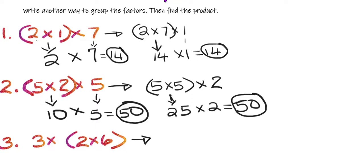Instead of doing 3 × 2 × 6, what if we did 3 × 6 first? And then multiply that by two? So three times six is 18. 18 times two? That's 36.